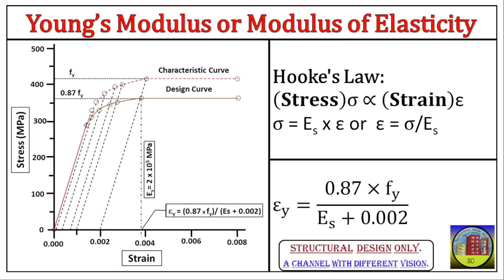This initial part of the curve beautifully showcases Hooke's law at work. Here, the steel deforms in direct proportion to the applied stress. Within the elastic limit, this proportionality can be expressed as sigma proportional to epsilon. To equate this proportionality and determine the amount of deformation for a given stress, we need a constant. This constant is ES, also known as Young's modulus or modulus of elasticity.